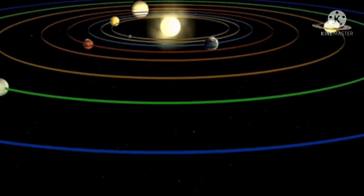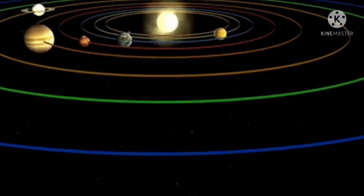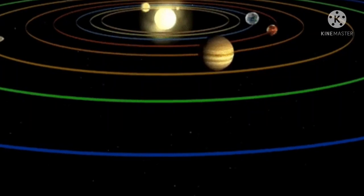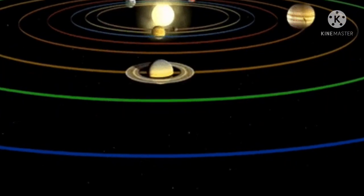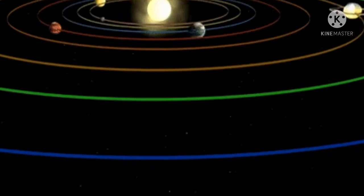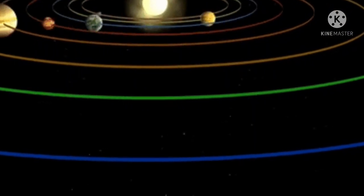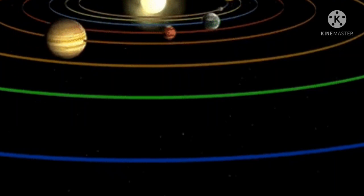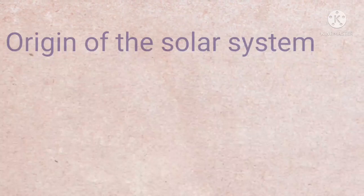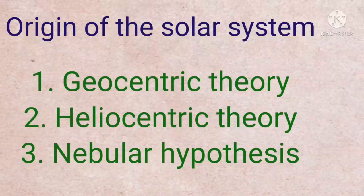The solar system also has satellites, comets, asteroids, and meteoroids. Scientists estimated the solar system was formed about 4.6 billion years ago. Now let's look at the origin of the solar system.